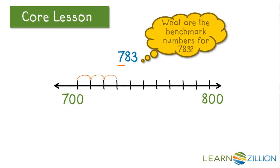We would count by 10's—10, 20, 30, 40, 50, 60, 70, 80—to finally get 783.